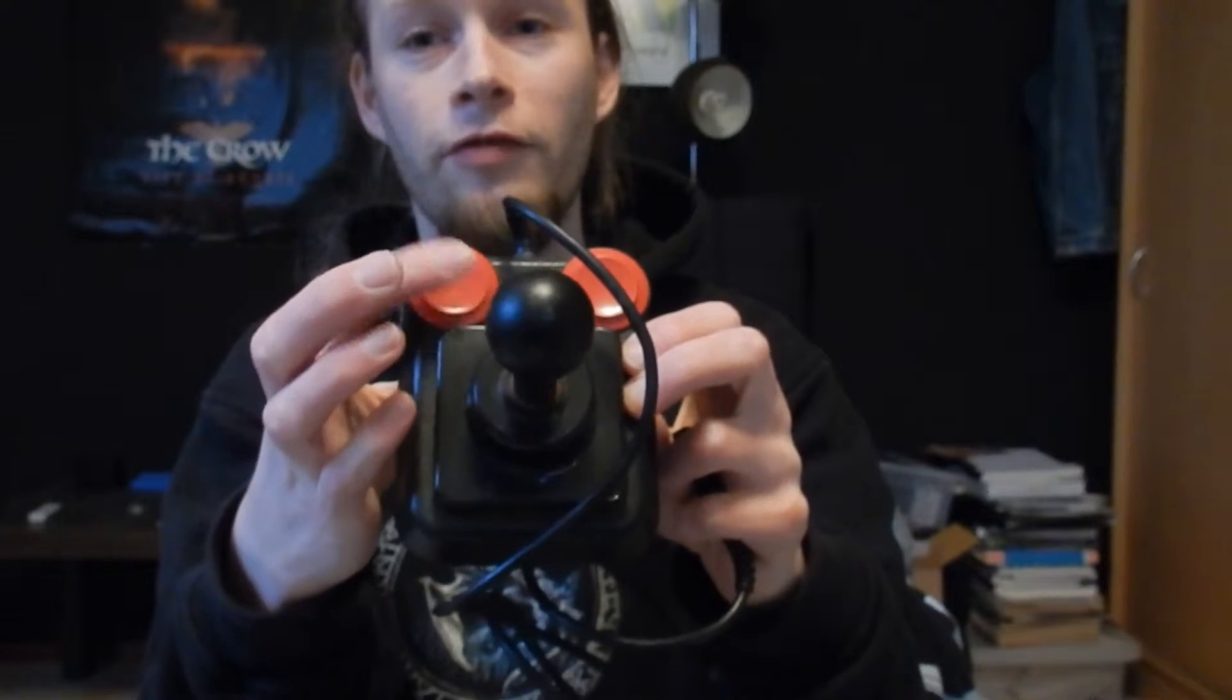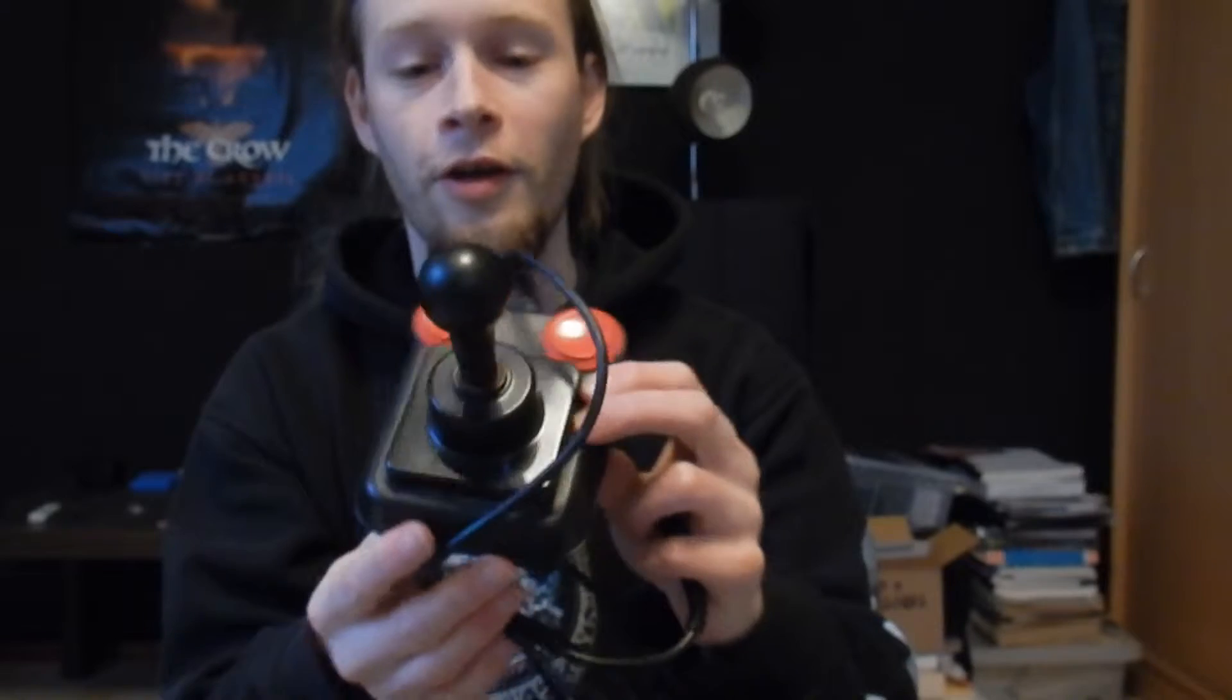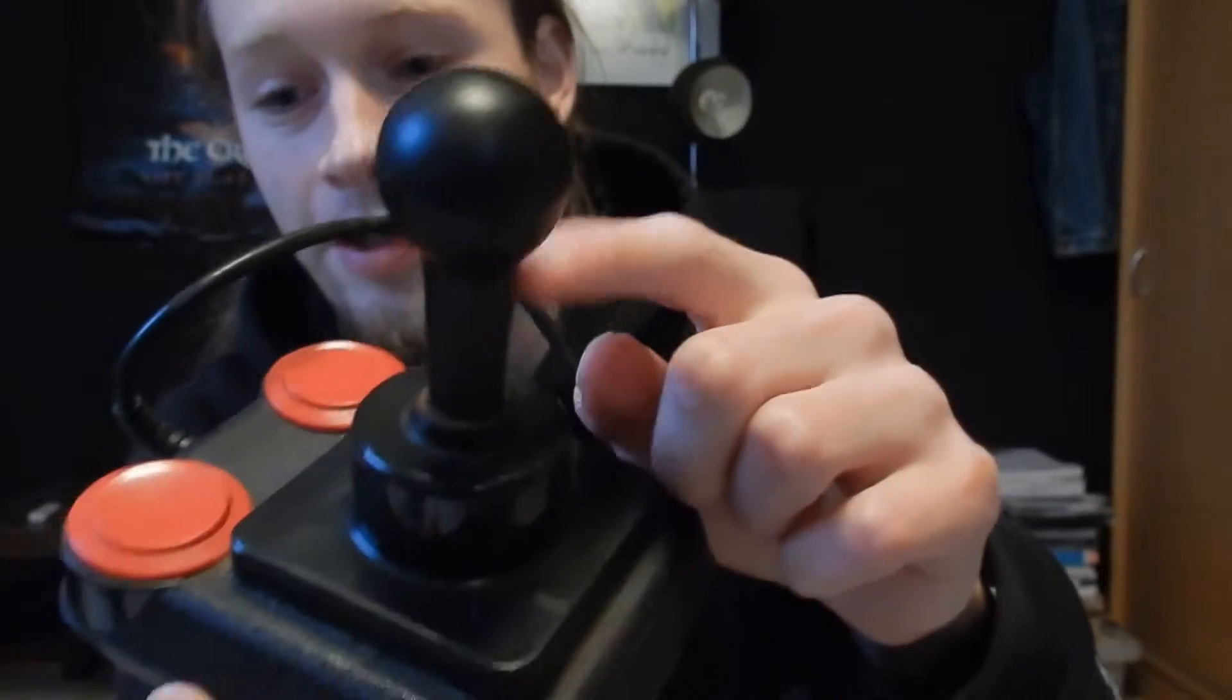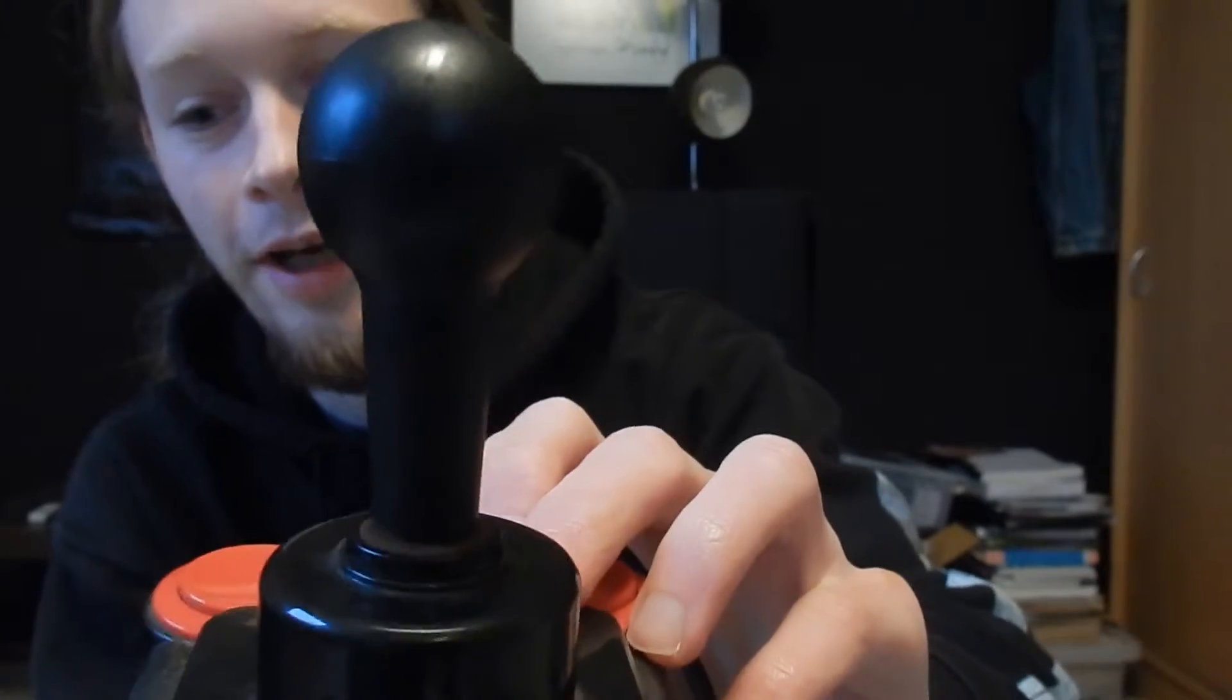These are the fire buttons. These are leaf switch buttons. The later versions of the Competition Pro used micro switch buttons. But those have a red stick. This is the very first model with a black stick. And as you can see, this stick is exactly the same as the really early Suzo Arcade models. Let's see if I can get one for comparison here.